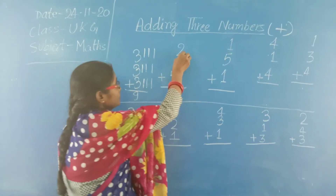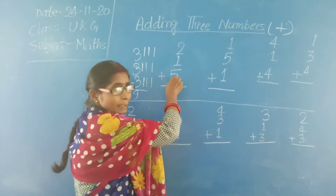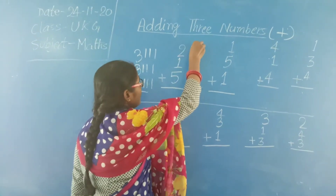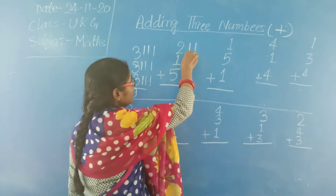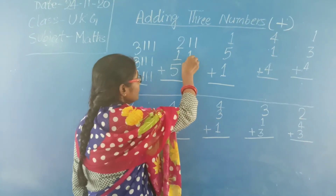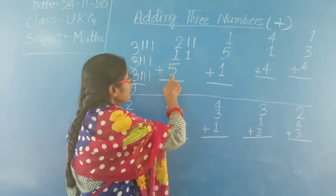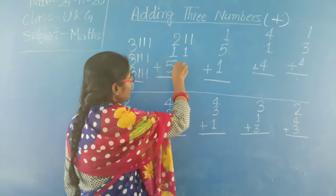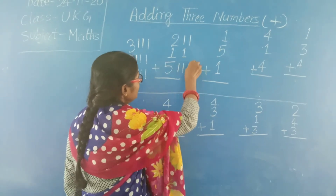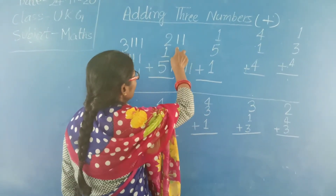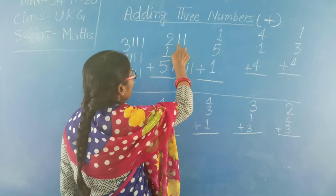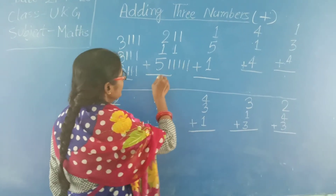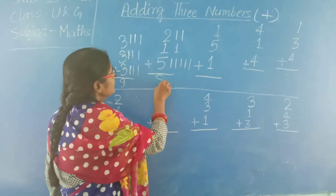Next: 2, 1, 5. So we will draw 2 lines: 1, 2. The second number is 1, so we draw 1 line. The third number is 5, so we draw 5 lines: 1, 2, 3, 4, 5. Now count: 1, 2, 3, 4, 5, 6, 7, 8. The answer is 8.